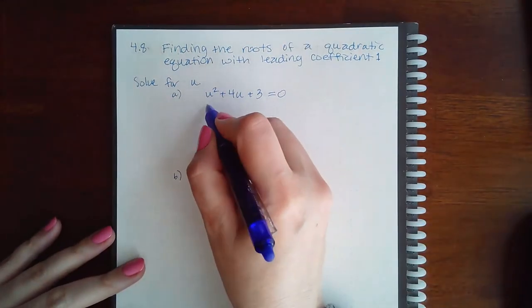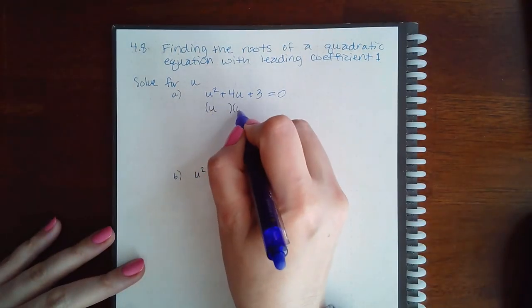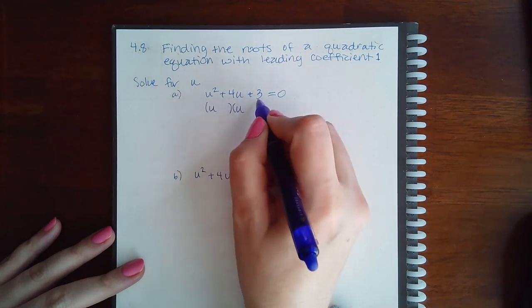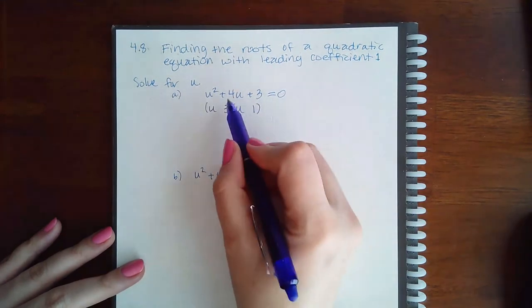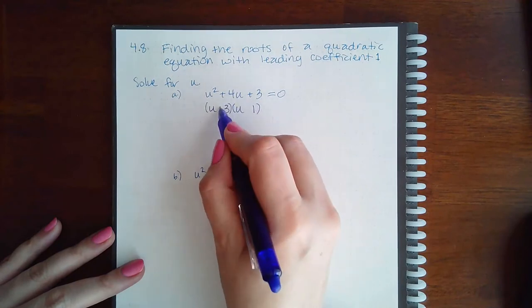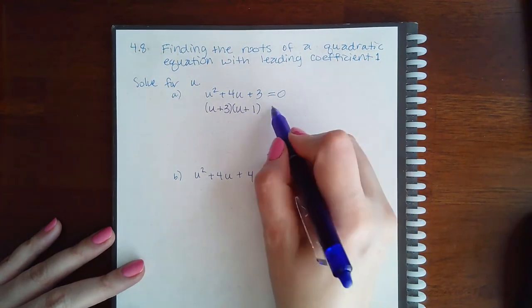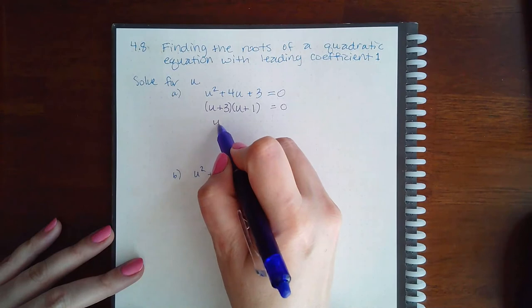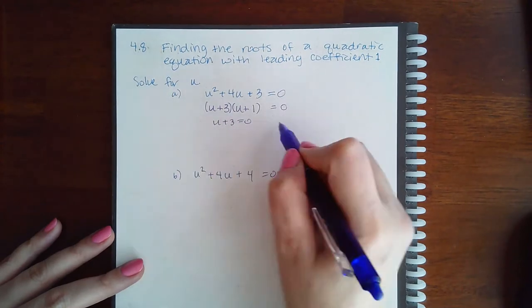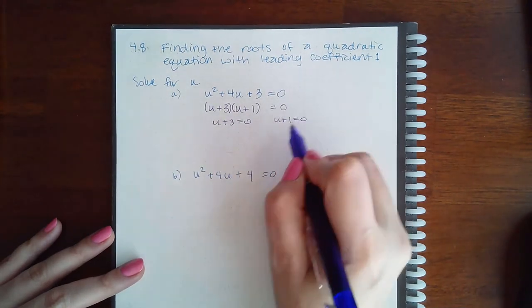There is no number in front, so I can use the shortcut to factoring. The only factors of 3 are 3 times 1, and in order to get a positive 4, these would both have to be positive.